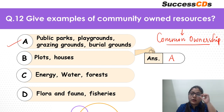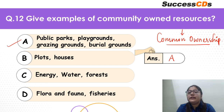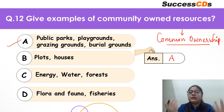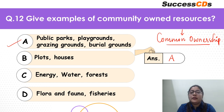For example, the metro can be said to be a public good because it is for the public. Community resources are things the community can use — they bring utility for everyone. Playgrounds, grazing grounds, burial grounds and cremation grounds — everybody can go there. That is why these are community-owned resources.